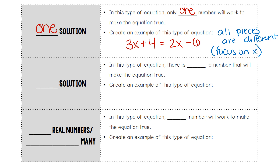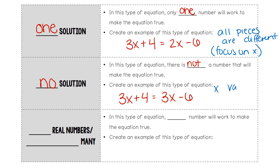The second type of solution is called a no solution, meaning that in this equation there is not a number that will make the equation true — all answers would be incorrect. An example would be 3x plus 4 equals 3x minus 6. If the x values match but the other numbers are different, the positive 4 and the negative 6, then that represents a no solution.